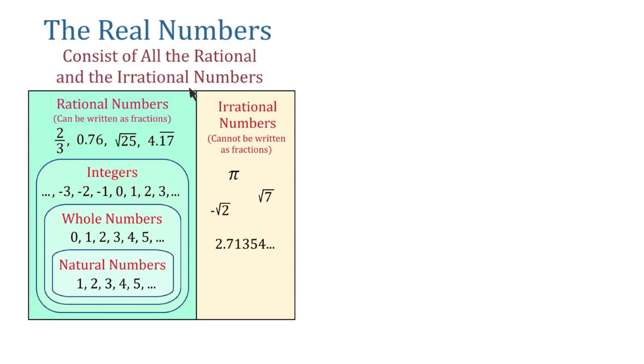The real numbers consist of all the rational numbers and the irrational numbers. Inside the rational numbers we have the integers, the whole numbers, and the natural numbers.